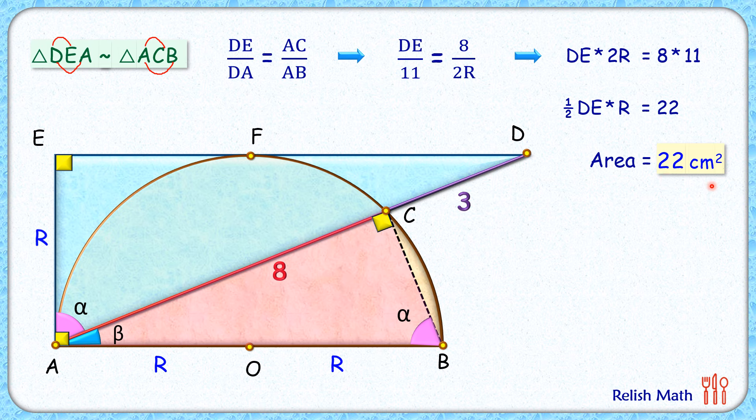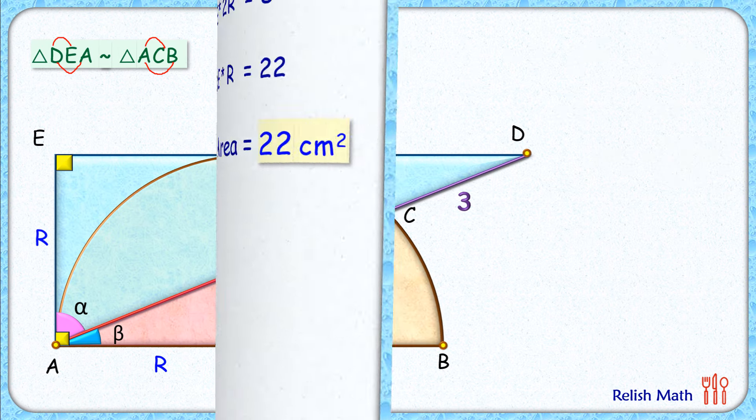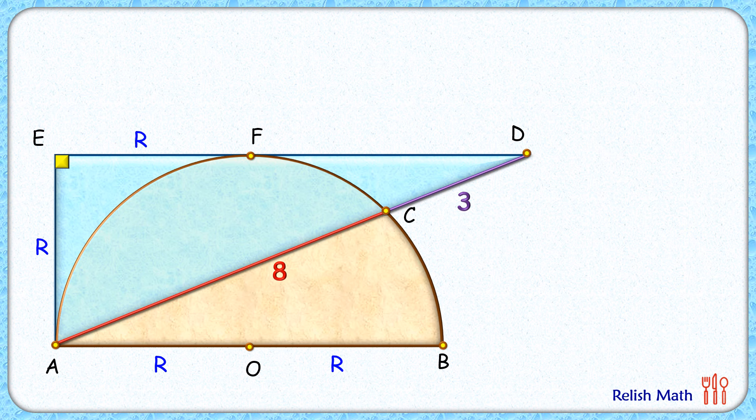Let's solve it by the second approach using tangent secant theorem. Now in this approach, with respect to this brown semicircle, DE is an external point from which we have drawn a tangent here, and DA is a secant with respect to this semicircle.